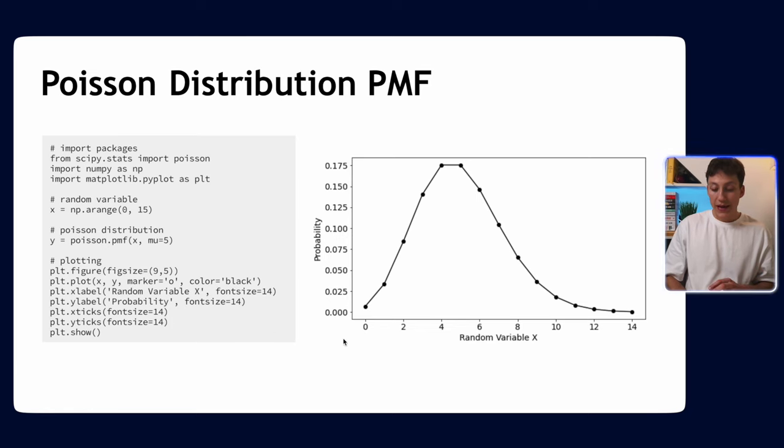This is what the result looks like. As you can see, the most likely number of claims we're going to get in that hour period is five, which makes sense because that is the mean rate, so that's the most likely.